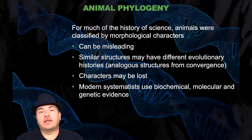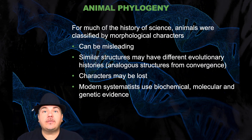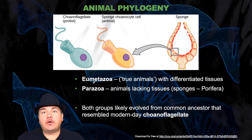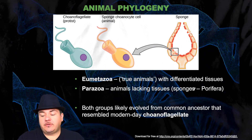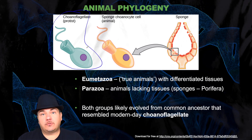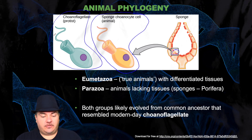For most of the history of science, animals were classified by morphological characteristics, which can be misleading. Similar structures might have different evolutionary histories — they could be analogous structures due to convergence. Characters can also be lost. More recently, we can use biochemical, molecular, and genetic evidence to form the phylogeny of animals. Recall you have the Eumetazoa — true animals with differentiated tissues — and the Parazoa, which are animals lacking tissues, like sponges. Both groups likely evolved from a common ancestor that resembled modern-day choanoflagellates, which are protists whose structure is very similar to some of the cells inside a sponge.